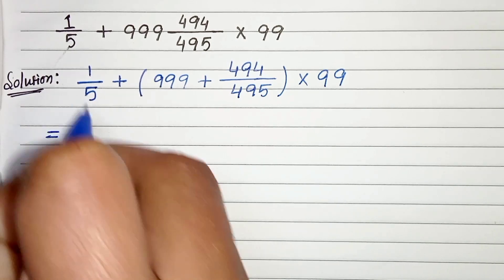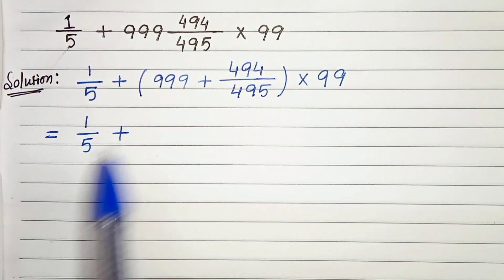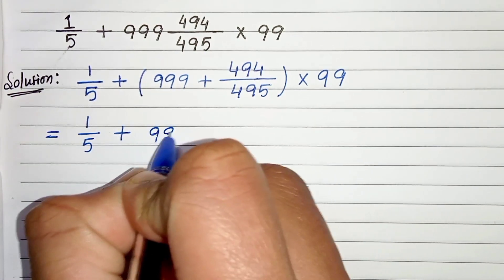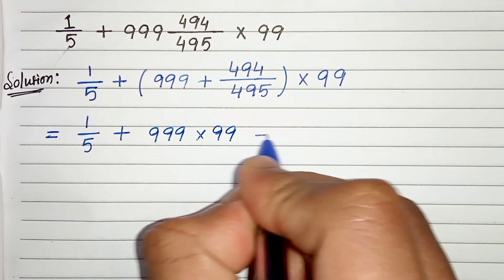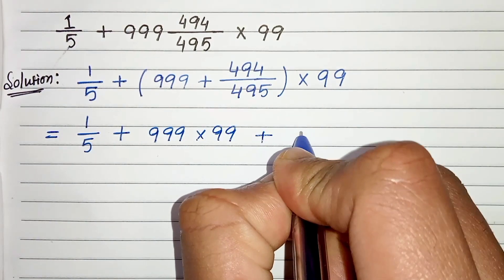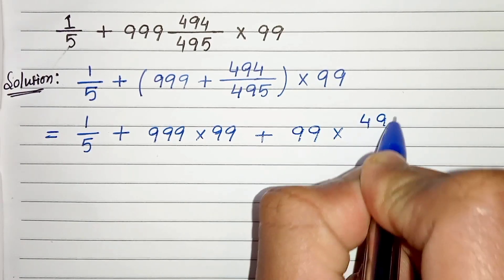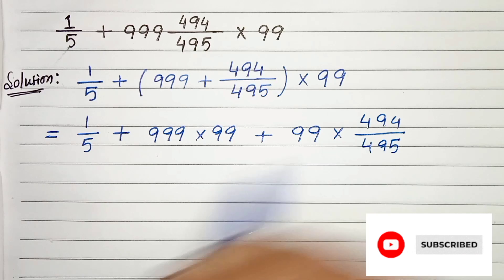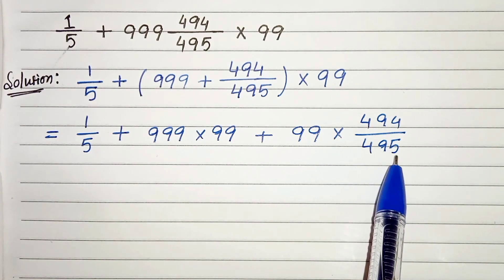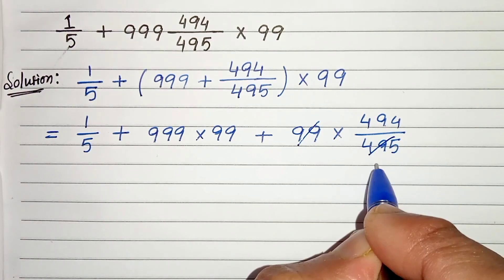Now in the next step, 1/5 plus, let's multiply 99 with 999. So 999 times 99 plus 99 times 494/495. Now 495 can be divided by 99, so 99 and 495 will cancel and we will get 5.